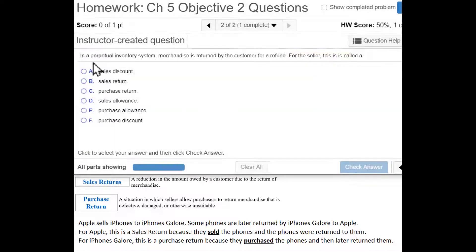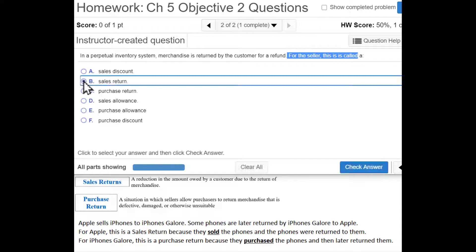Let's look at the second question. In a perpetual inventory system, merchandise is returned by the customer for a refund. For the seller, the seller would call it a sales return because the seller did the selling. They made the sale and then later it was returned to them.